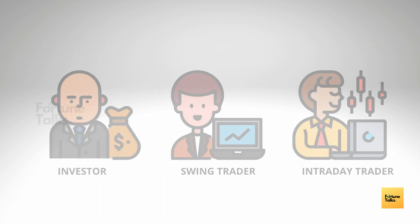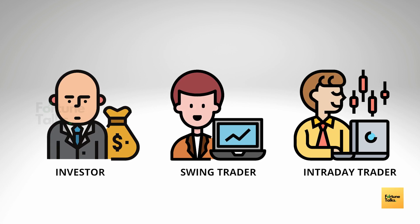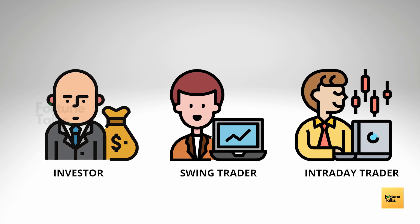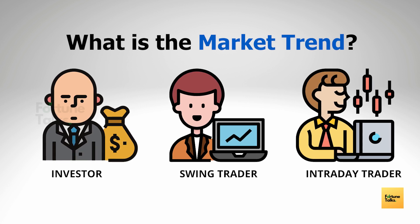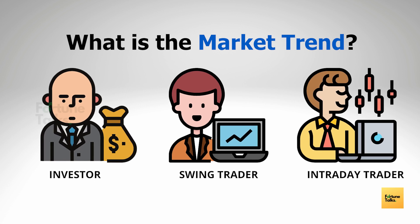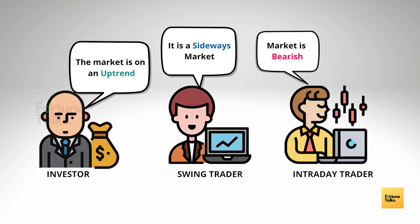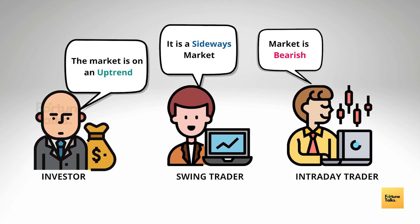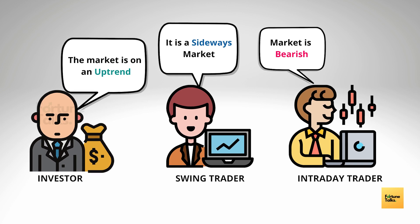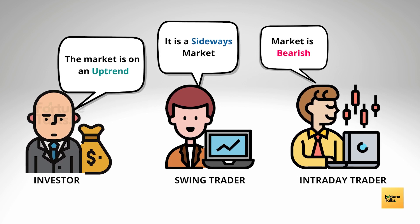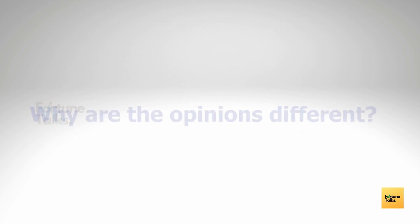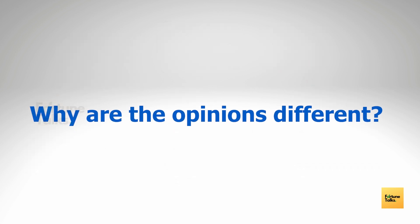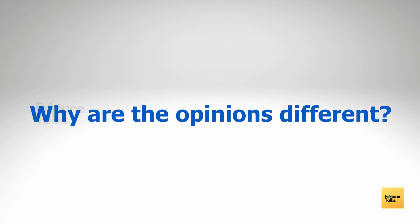Consider a situation with three stock market participants: an investor, a swing trader, and an intraday trader. If asked what the present market trend is, they will not necessarily have the same answer. The investor could say it's a bullish market, while the intraday trader would say it's a bearish trend. Even the swing trader might say the market is sideways. Why do different people have different views on the market trend given the same charts and conditions?